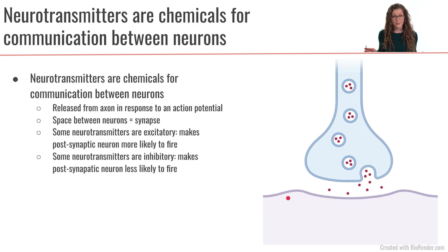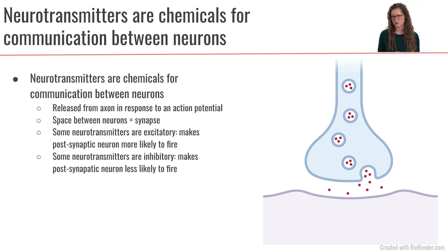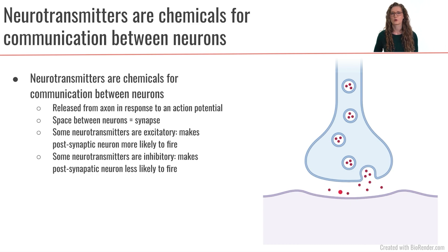Now, there are many different kinds of neurotransmitters out there. Some are excitatory neurotransmitters, meaning they're going to make the postsynaptic neuron more likely to fire an action potential. There are also other types that are inhibitory, which would make it less likely that the postsynaptic neuron is going to send out an action potential. So that is how neurons communicate — through the language of neurotransmitters. The other important thing to keep in mind is that the postsynaptic neuron or tissue has to have receptors on it that specifically bind to this neurotransmitter or signaling chemical.